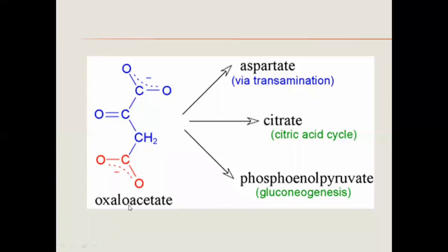Oxaloacetate has other fates as well. We have studied that there is aspartate formation through the transamination reaction, and aspartate donates its amino group during urea production. When oxaloacetate is recycled in the Krebs cycle, it can combine with acetyl-CoA to give citrate. Oxaloacetate can also be used for the production of glucose through gluconeogenesis.